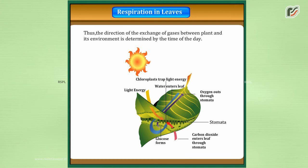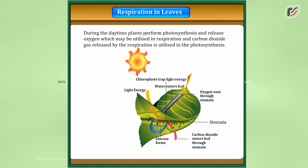Thus, the direction of the exchange of gases between plant and its environment is determined by the time of the day. During the daytime, plants perform photosynthesis and release oxygen which may be utilized in respiration, and carbon dioxide gas released by respiration is utilized in photosynthesis.